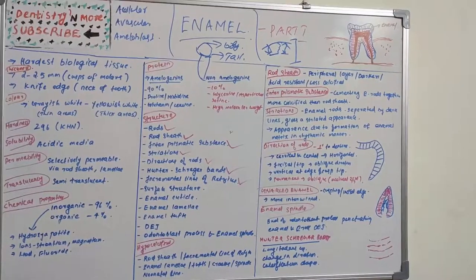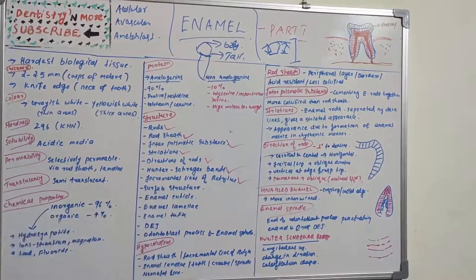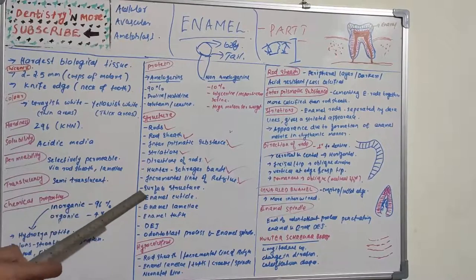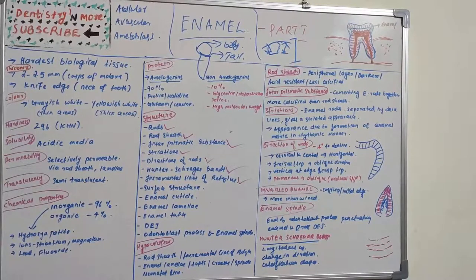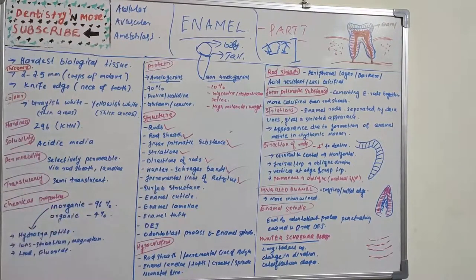Incremental lines of Retzius are brownish bands seen in ground sections of enamel that illustrate successive apposition of layers of enamel during formation of the crown. In enamel mineralization, minerals are deposited layer by layer. This rhythmic pattern of mineral deposition is reflected in ground sections as distinct lines, which are indicators of rhythmic mineralization pattern.